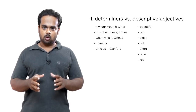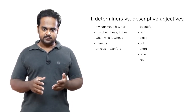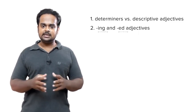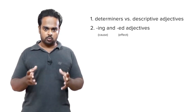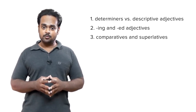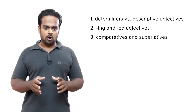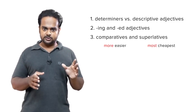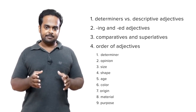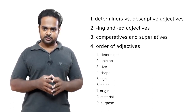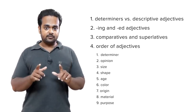OK, before we finish this lesson, let's do a quick recap of what we've learned. We first learned about the two main types of adjectives: determiners — grammar words that act as adjectives — and descriptive adjectives. Then we looked at ED and ING adjectives: ING adjectives show cause or reason, and ED adjectives show effect or result. Then we covered comparatives and superlatives — remember not to use ER forms with more, or EST forms with most. And finally, we learned the order of adjectives: determiner, opinion, size, shape, age, color, origin, material, and purpose. Memorizing this order will help you avoid errors.